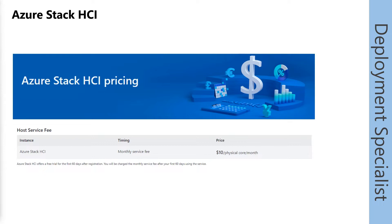We have 60 days without any additional costs — a 60-day trial after installation. Even if we use the system in production, the first 60 days are free of charge. After this, we have a monthly service fee of $10 per physical core per month. It's not the logical CPUs. So if you use hyper-threading in a system with 16 physical cores, you will see 32 logical CPUs. For you, the physical cores are relevant, not the logical CPUs.